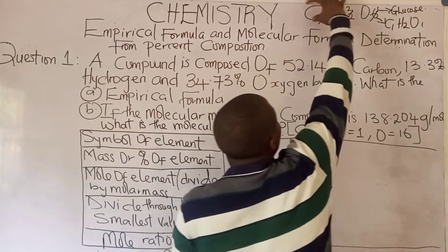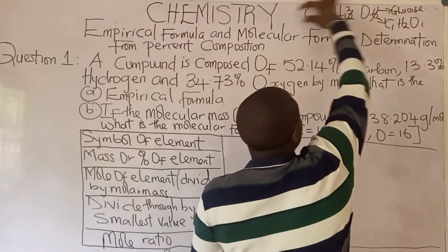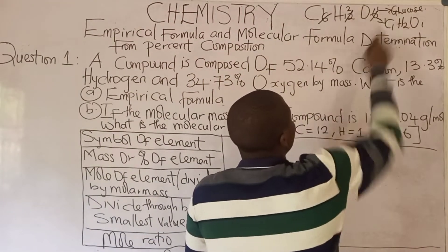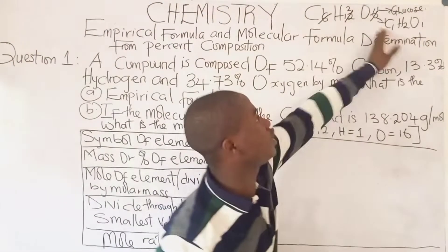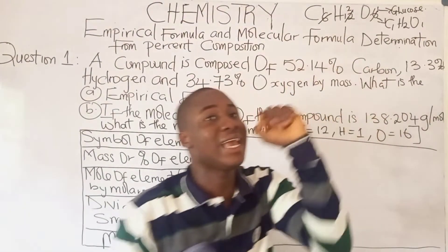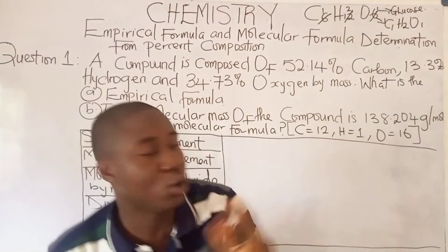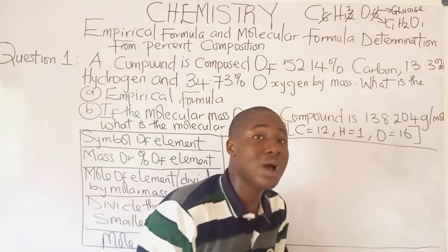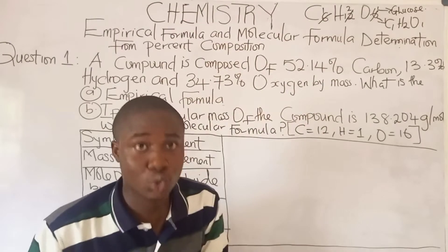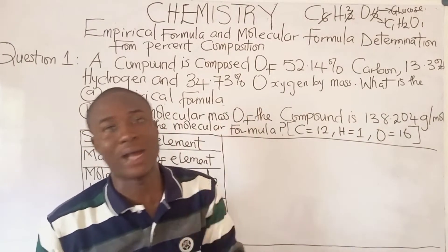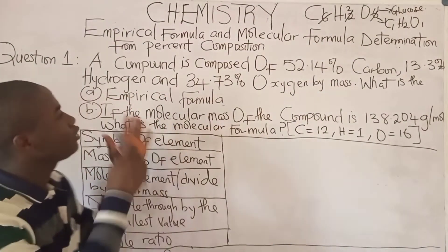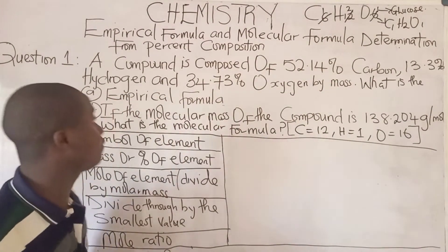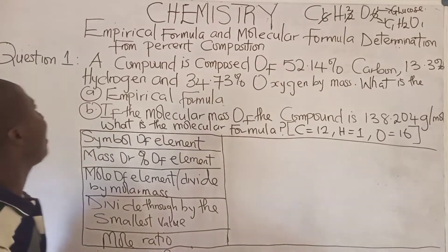This is the molecular formula of glucose, which is C6H12O6. But the empirical formula of glucose is just C1H2O1. Let's quickly move over to the question for today, where we'll be solving various questions.